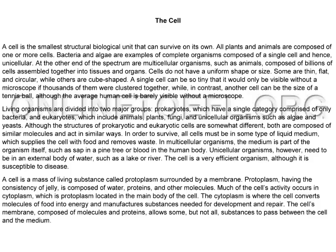Living organisms are divided into two major groups: prokaryotes, which have a single category comprised of only bacteria, and eukaryotes, which include animals, plants, fungi, and unicellular organisms such as algae and yeasts.